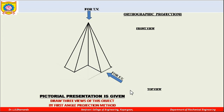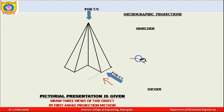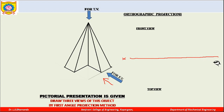We are going to observe this particular object for the front view from this direction. For the top view we have to look from the top side. Let us try to draw first the front view and then the top view of this object. First we will draw the XY line, which is a reference line. By the first angle method, the front view will be above the XY line and the top view will be below the XY line.